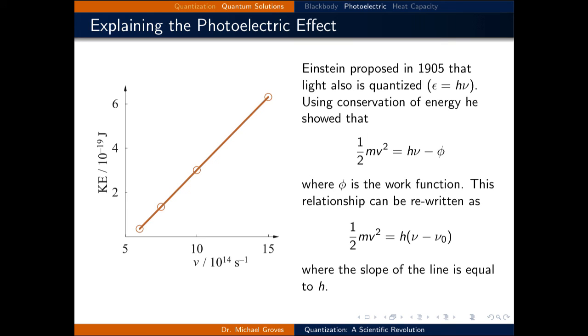Notice that this equation is that of a line. And so the figure on the left shows data from the emissions of electrons from sodium. The first data point is at 5.51 times 10 to the 14 hertz, which represents the threshold frequency. And also note that the slope of this line is equal to Planck's constant h.